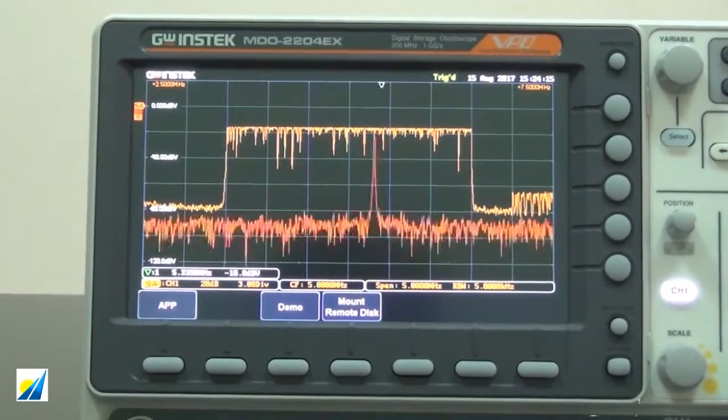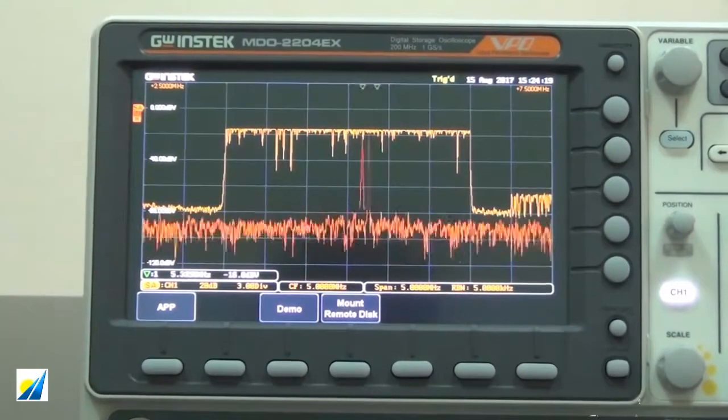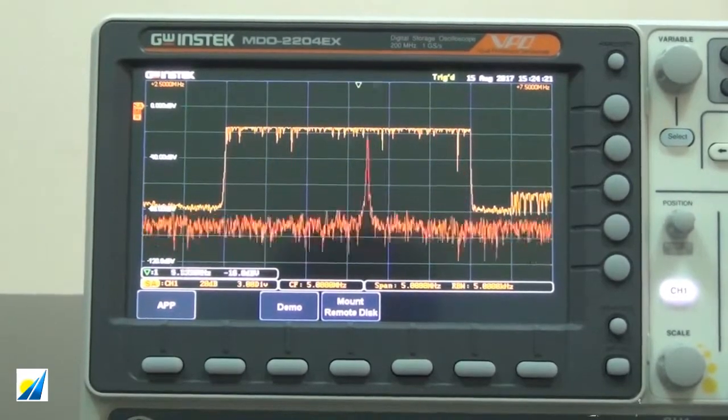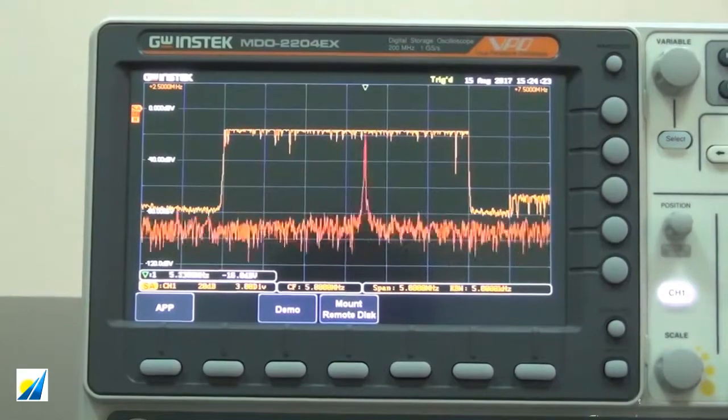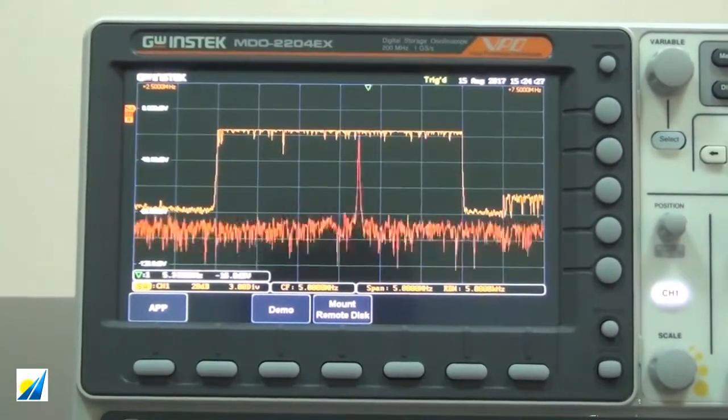Spectrum trace is set on the maximum hold. Now, we could clearly observe the high-speed frequency sweep from 3.5MHz to 6.5MHz on the MDO-2000E.